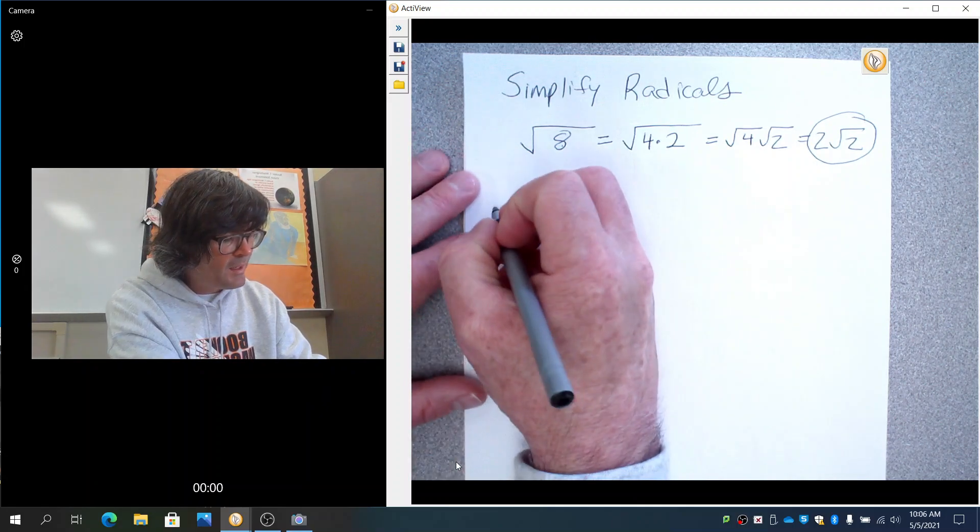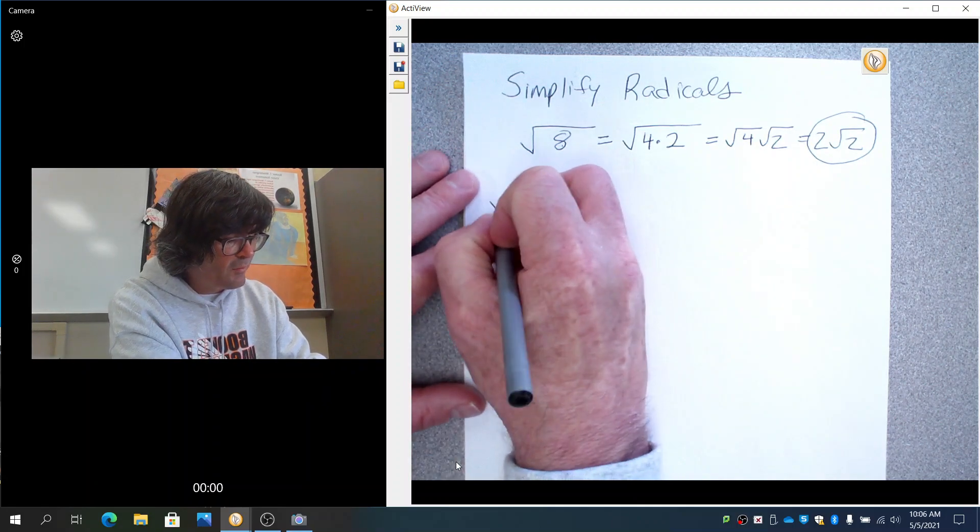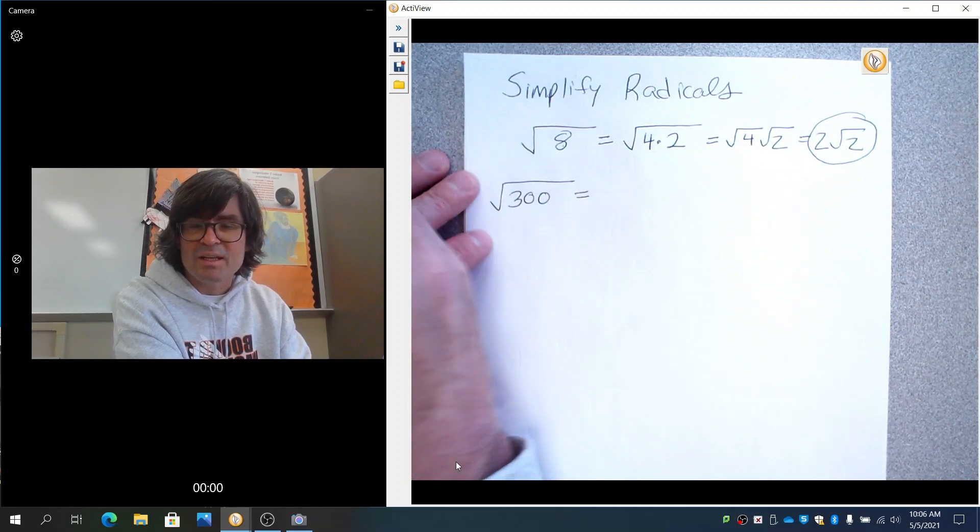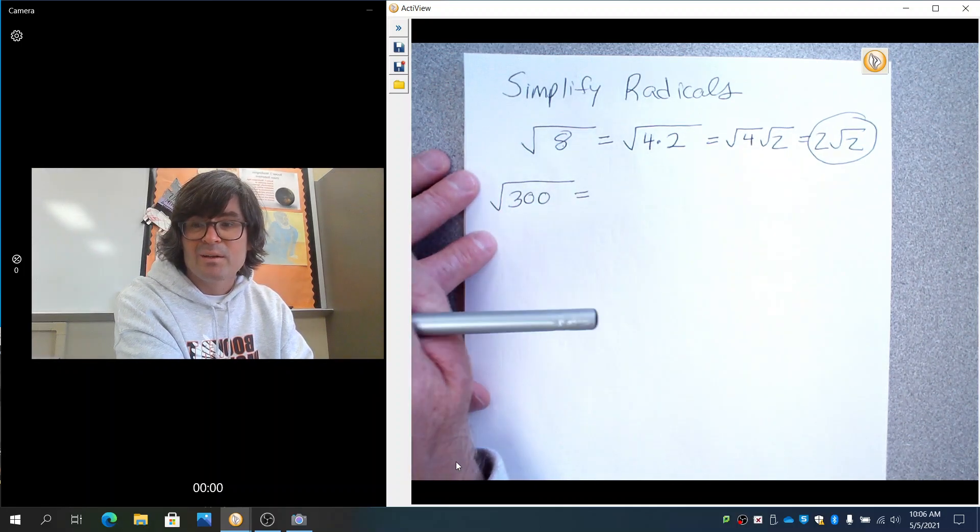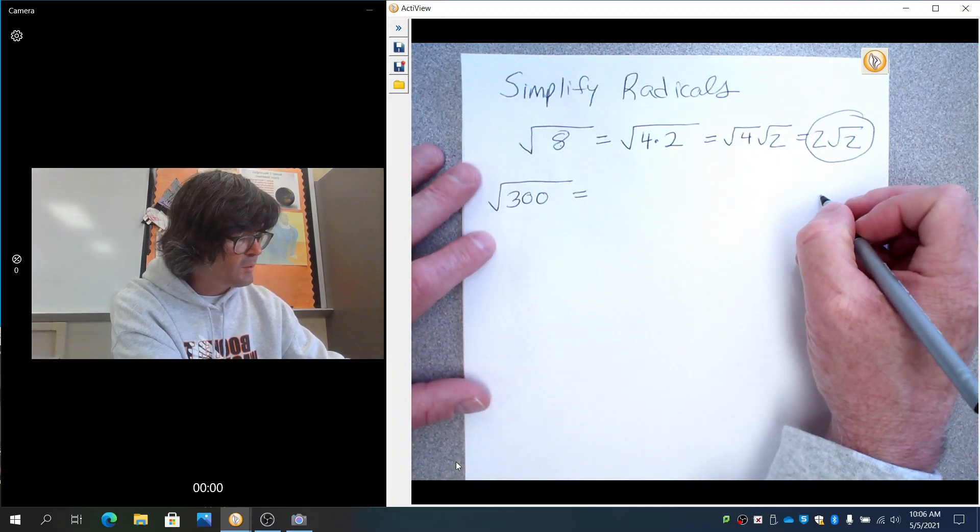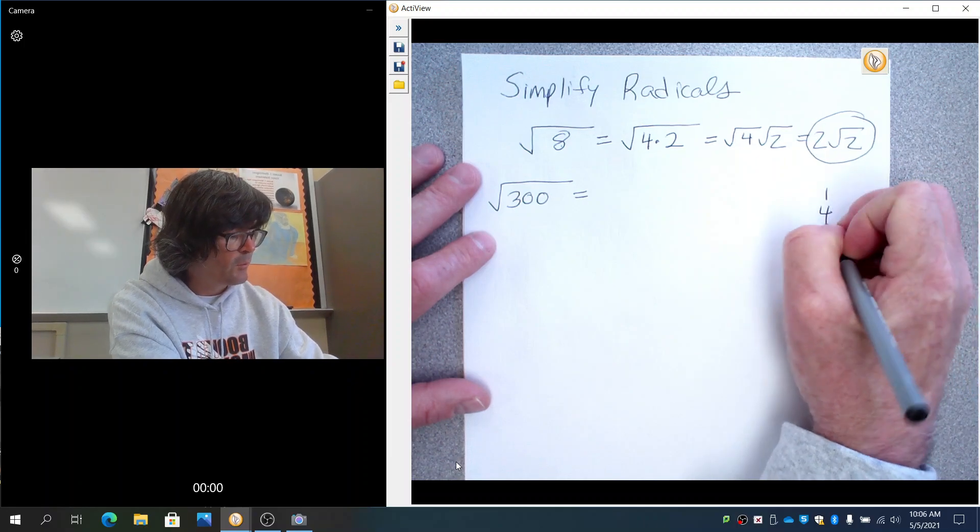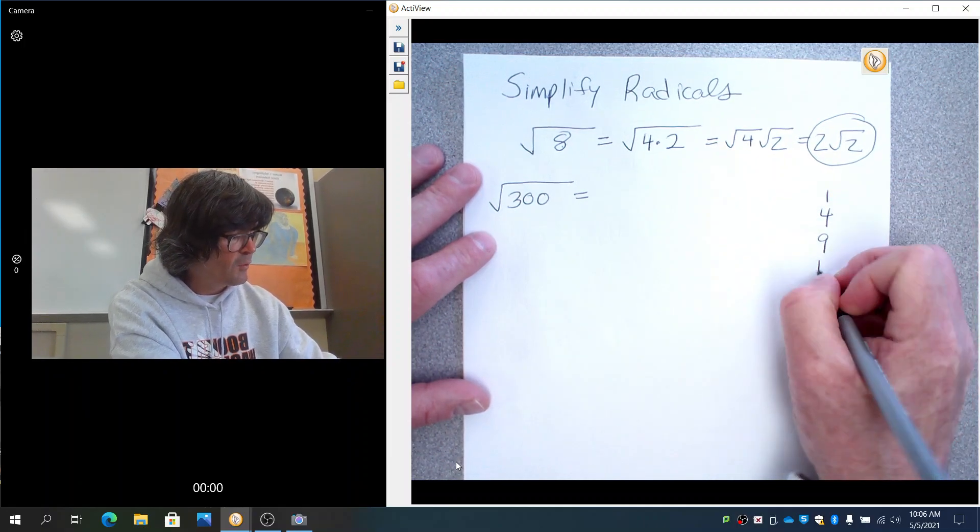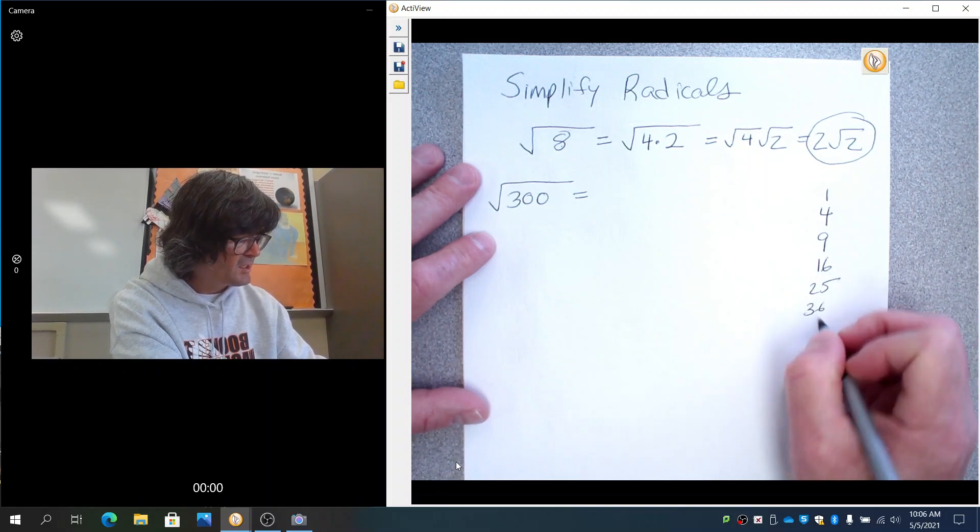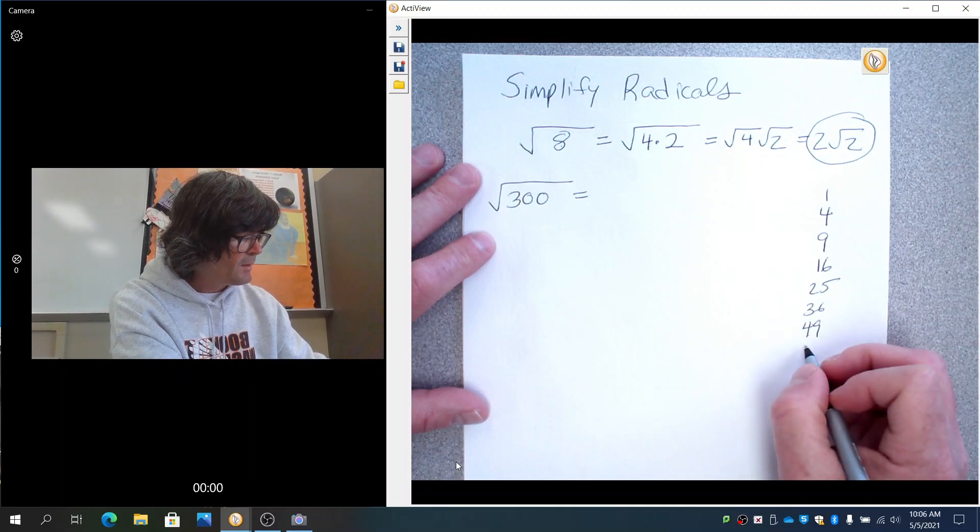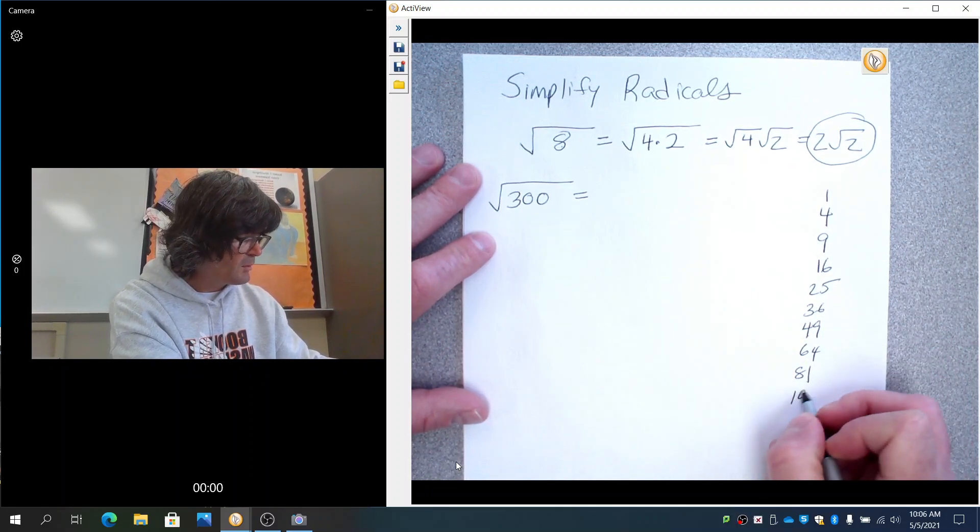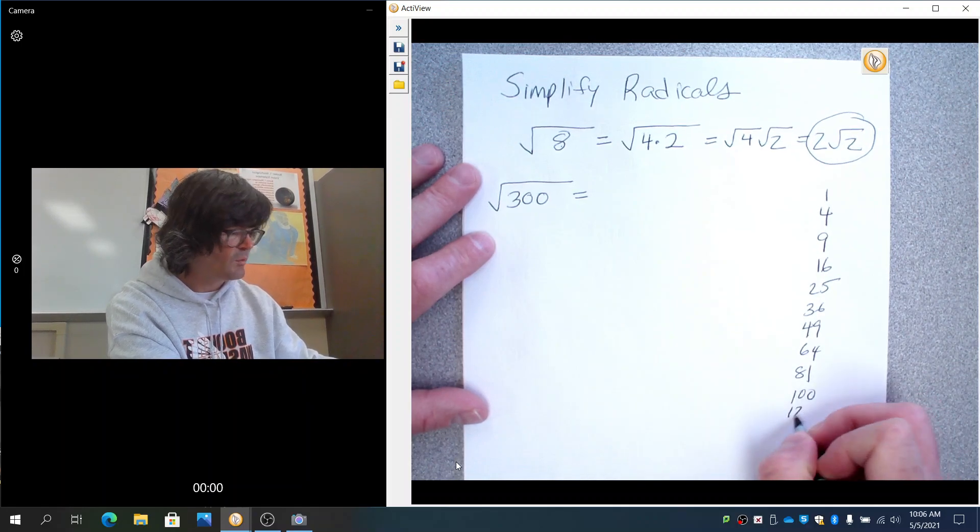Let's try another one. Say we have the square root of 300. What you want to do is think about what nice perfect square goes into 300. If you don't know your perfect squares, it might help to review: 1 squared is 1, 2 squared is 4, 3 squared is 9, 4 squared is 16, 5 squared is 25, 6 squared is 36, 7 squared is 49, 8 squared is 64, 9 squared is 81, 10 squared is 100, and 11 squared is 121.